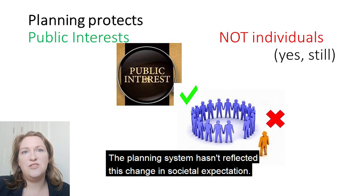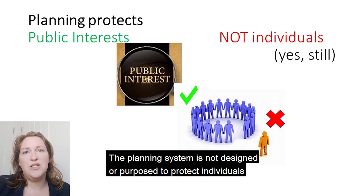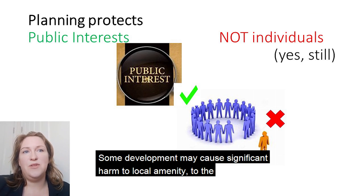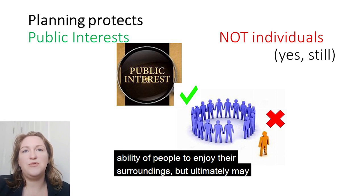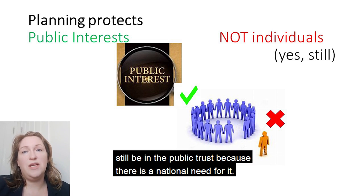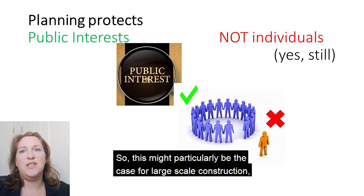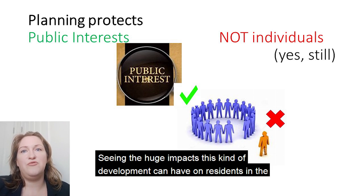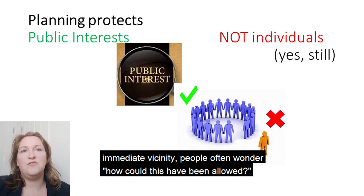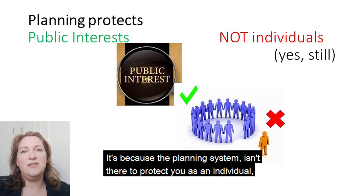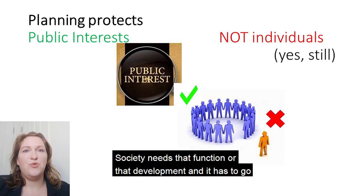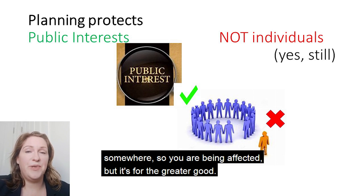The planning system hasn't reflected this change in societal expectation. The planning system is not designed or purposed to protect individuals from the impacts of development. It's designed to prevent development which is harmful to the wider public interest. Some development may cause significant harm to local amenity — the ability of people to enjoy their surroundings — but ultimately may still be in the public interest because there is a national need for it. This might particularly be the case for large-scale construction for house building or other purposes. Seeing the huge impacts this kind of development can have on residents in the immediate vicinity, people often wonder how could this have been allowed? But it's because the planning system isn't there to protect you as an individual. It's there to protect the wider public interest. Society needs that function or that development, and it has to go somewhere. So you are being affected, but it's for the greater good.